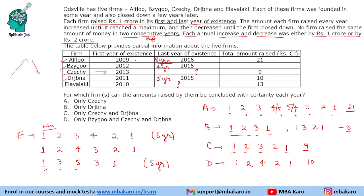The question asks: for which firms can the amounts raised be concluded with certainty for each year? For A, we cannot conclude. For B, we cannot conclude. For C and D, we can conclude the amounts. So the answer is C and D.